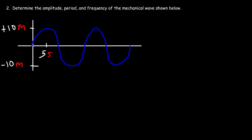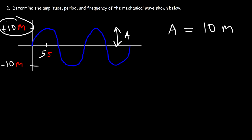Number two: determine the amplitude, period, and frequency of the mechanical wave shown below. The amplitude is the distance between the midpoint or the center line and the crest of the wave. In this example we can clearly see that it's 10 meters.